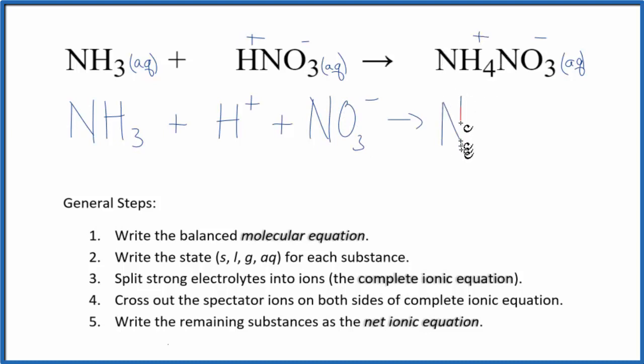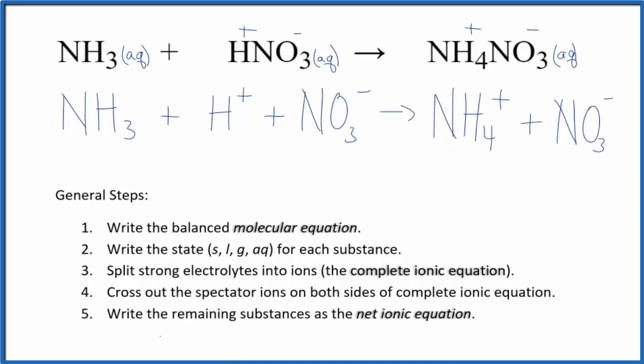Products, we have the ammonium ion, NH4 plus, and then we have the nitrate ion, NO3 minus. So this is the complete ionic equation.